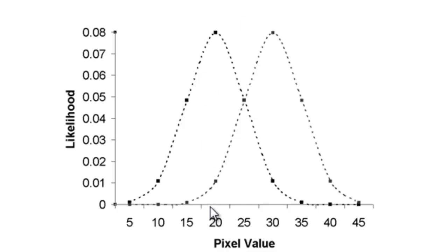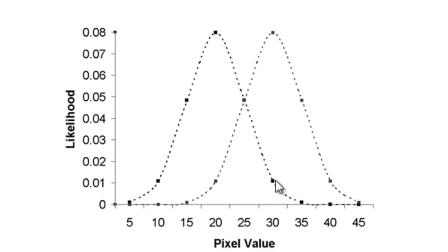Our unburned polygon had a mean value of 20 and our burned polygon had a mean value of 30 from within those training polygons. This bell-shaped curve represents the likelihood for any pixel value. For example, a pixel value of 20 has a low likelihood of being classified as burned but a much higher likelihood of being classified as unburned. Conversely, a value of 30 has a low likelihood of coming from the unburned polygon and a much higher likelihood of coming from the burned polygon. A value of 40 still has a higher likelihood of coming from burned than unburned.